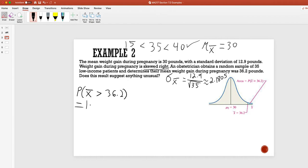in Excel we need 1 minus norm.dist of 36.2, comma, the mean of 30, standard deviation of 2.1805, and then true.